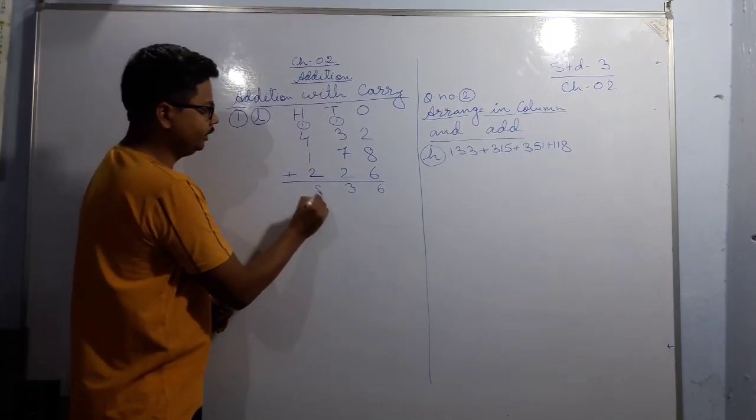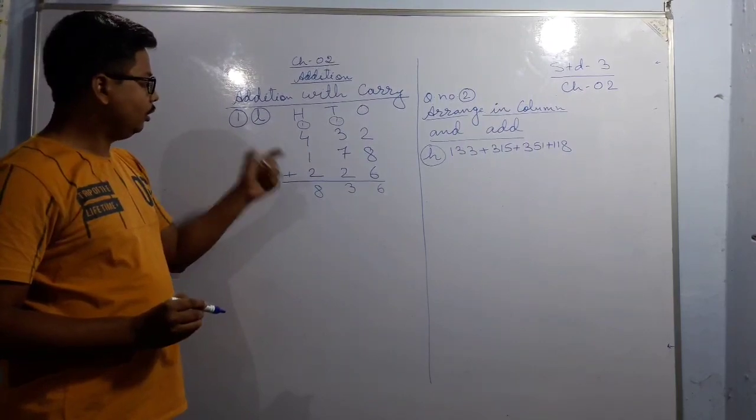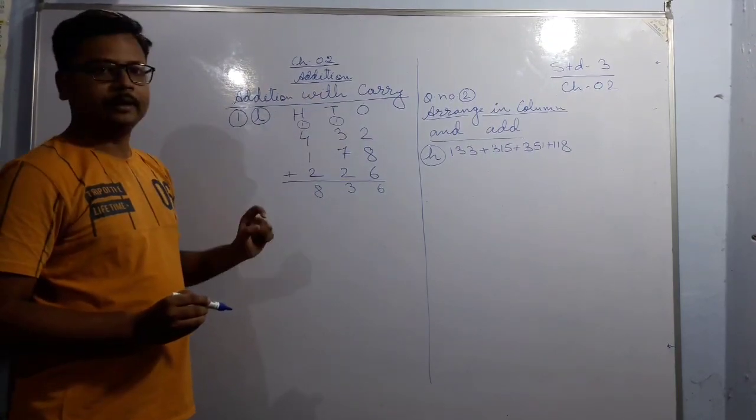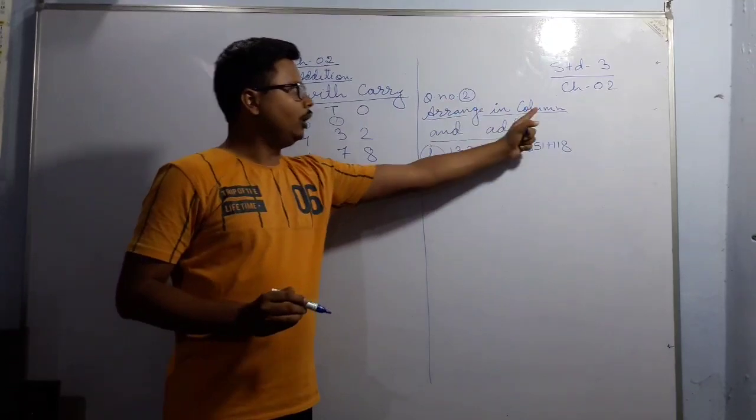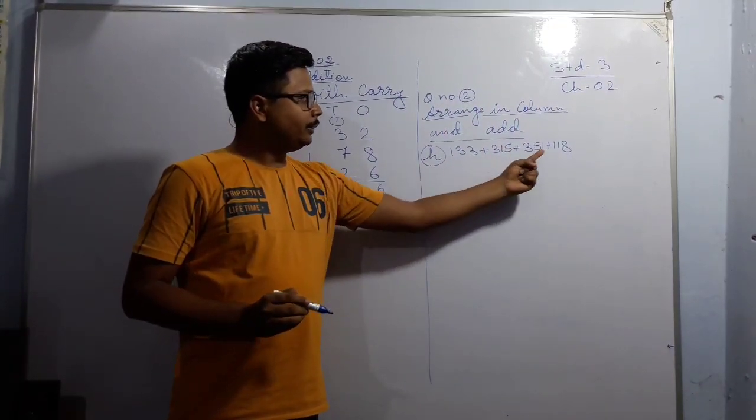Now come to the next question: arrange in column and add. See, you can see a few numbers are there: 133 + 315 + 351 + 118.